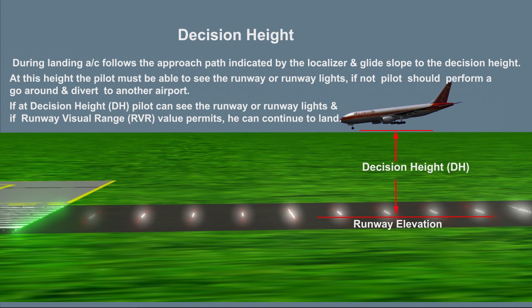At this height, the pilot must be able to see the runway or runway lights. If not, the pilot should perform a go-around and divert to another airport. If at the decision height the pilot can see the runway or runway lights, and if the RVR value permits, he can continue to land.